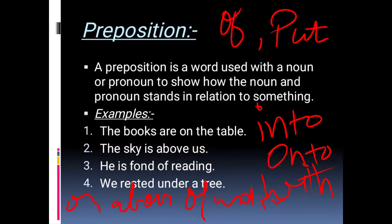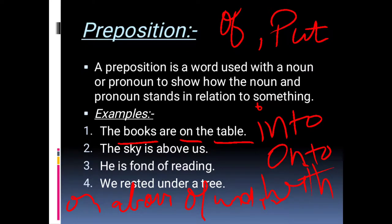Let's have a look at examples of prepositions. The first example is: The books are on the table. In this sentence, our preposition will be 'on,' as it is showing us the relationship between the books and the table. Moving towards the second sentence: The sky is above us. In this sentence, our preposition will be 'above,' as it is showing us the relationship between the sky and us.